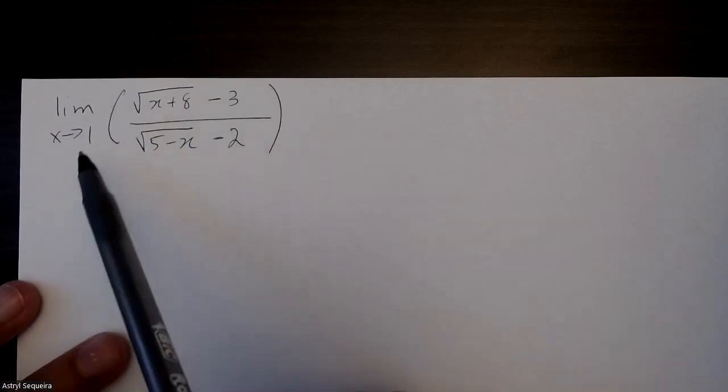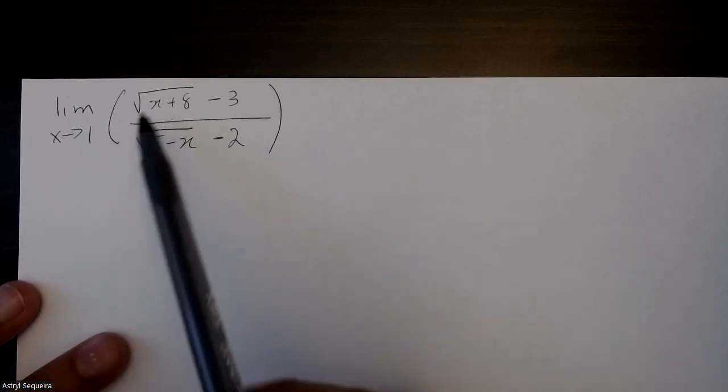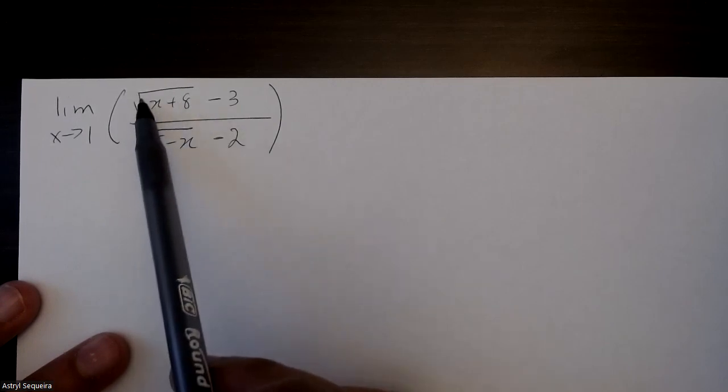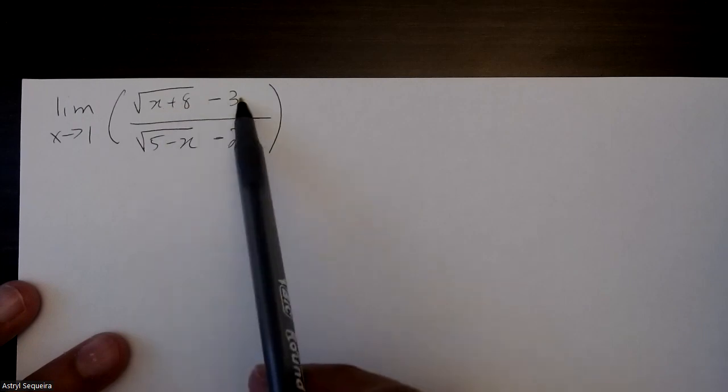Alright, so anytime I solve a limit question, I'm going to start by subbing my limit into the question. If I sub in 1 for x, I'll get root of 1 plus 8, which is 9. Root of 9 is 3. 3 minus 3 is 0.